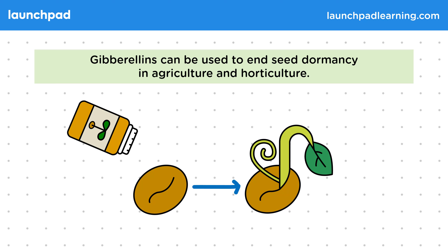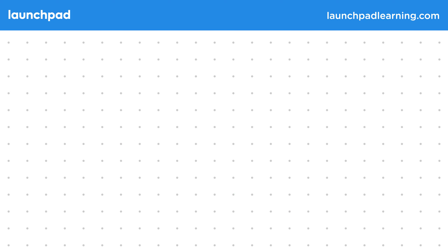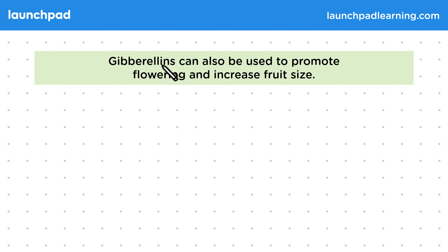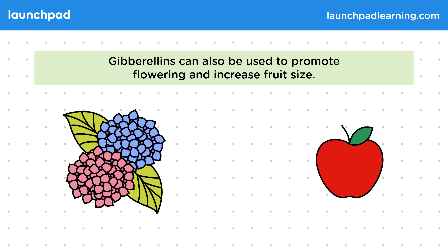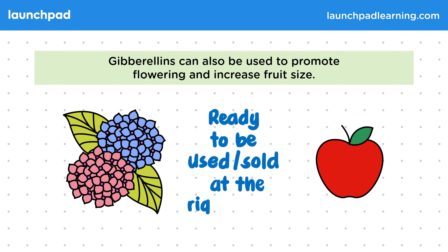What else can gibberellins be used for? Gibberellins can also be used to promote flowering and increase fruit size. This can help to make sure that plants and apples are ready to be used or sold at the right time — for example, because the plants have flowered or because the fruits are an appealing size to be eaten.